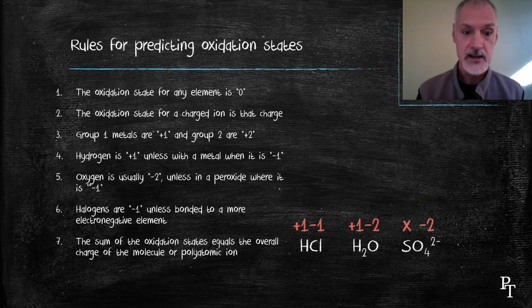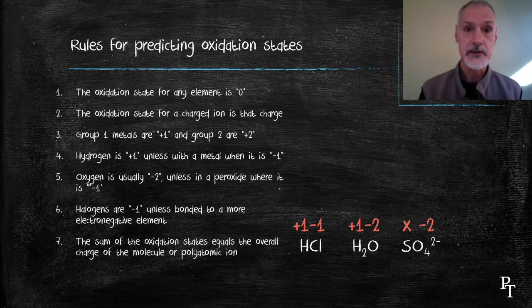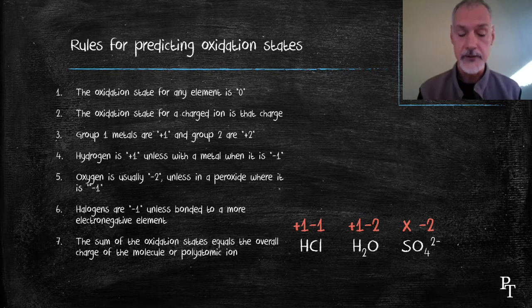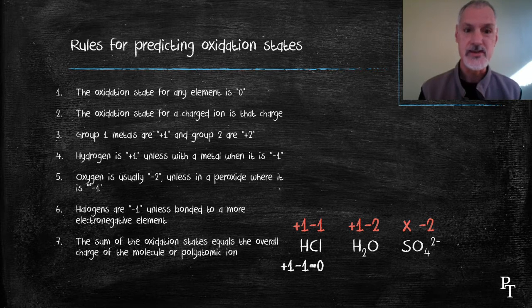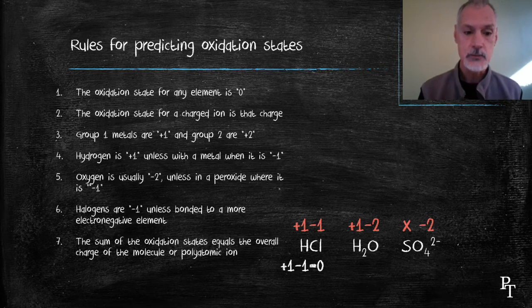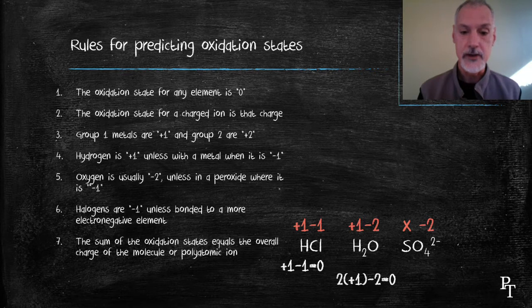Perhaps the most powerful rule is the final one. If we take a look at our first example, hydrogen has a charge of plus one, chlorine minus one. If I add those together, I get a charge of zero, and that's equal to the charge of the overall molecule. In my next example, water, two hydrogens and one oxygen. The total charge comes out to zero.